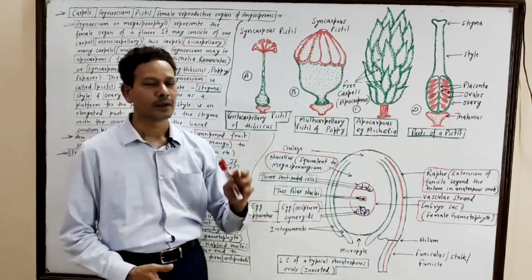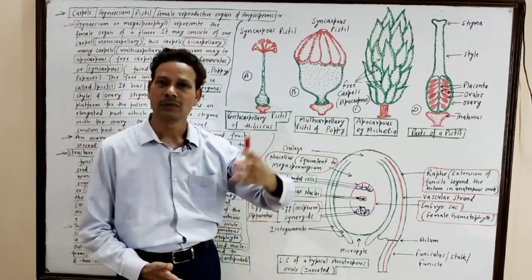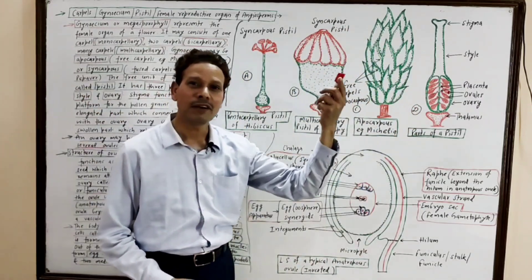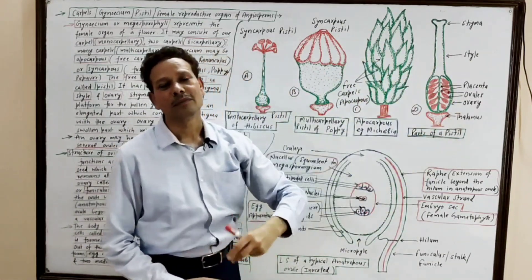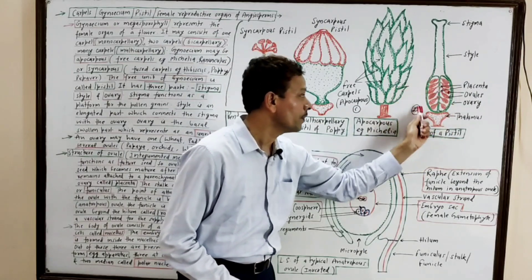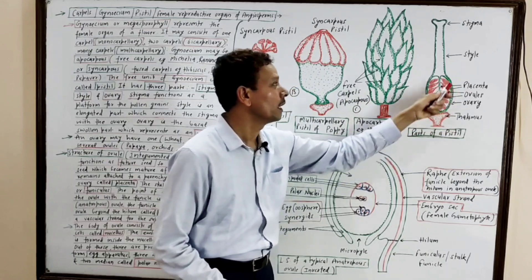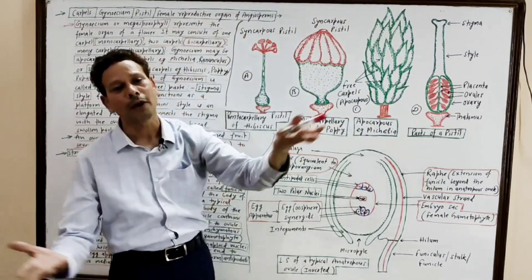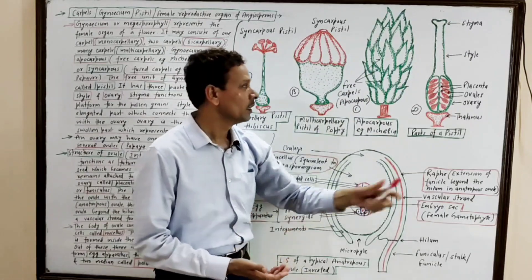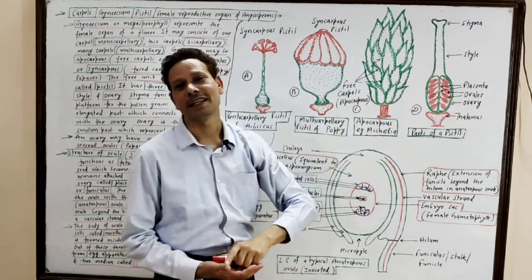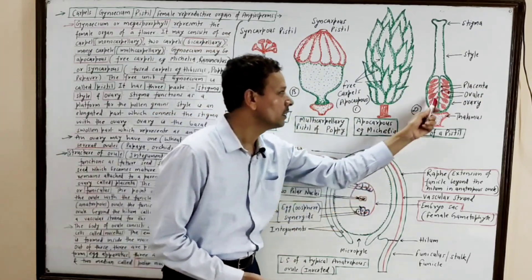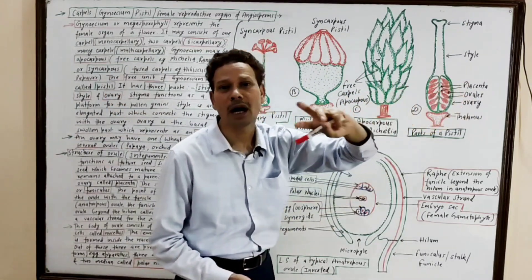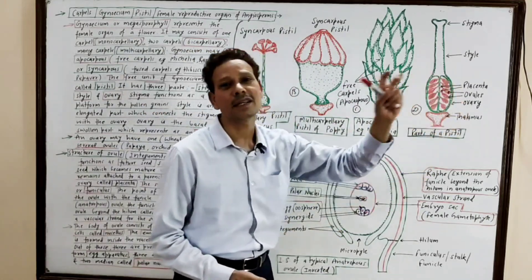Dear students, this is all about carpel, the pistil, the gynoecium, the megasporophyll — the female reproductive organ of angiosperms. A free unit of gynoecium is the pistil. Each pistil is differentiated into three parts: the basal swollen part is the ovary; the small stalk-like structure is the style; and the terminal part, which acts as a landing platform for pollen grains, is the stigma. In this ovary, ovules are present. The ovary represents the unripened fruit, and the ovules present in it represent the future seeds — the ovules are unripened seeds, while the ovary is unripened fruit.